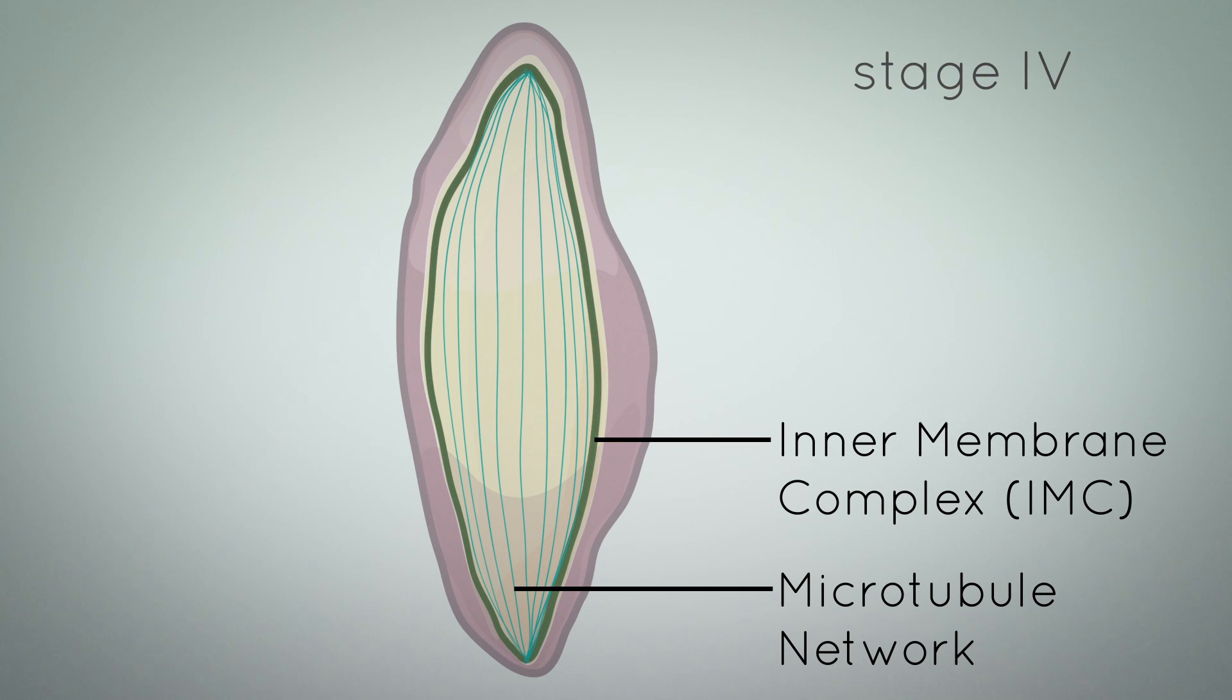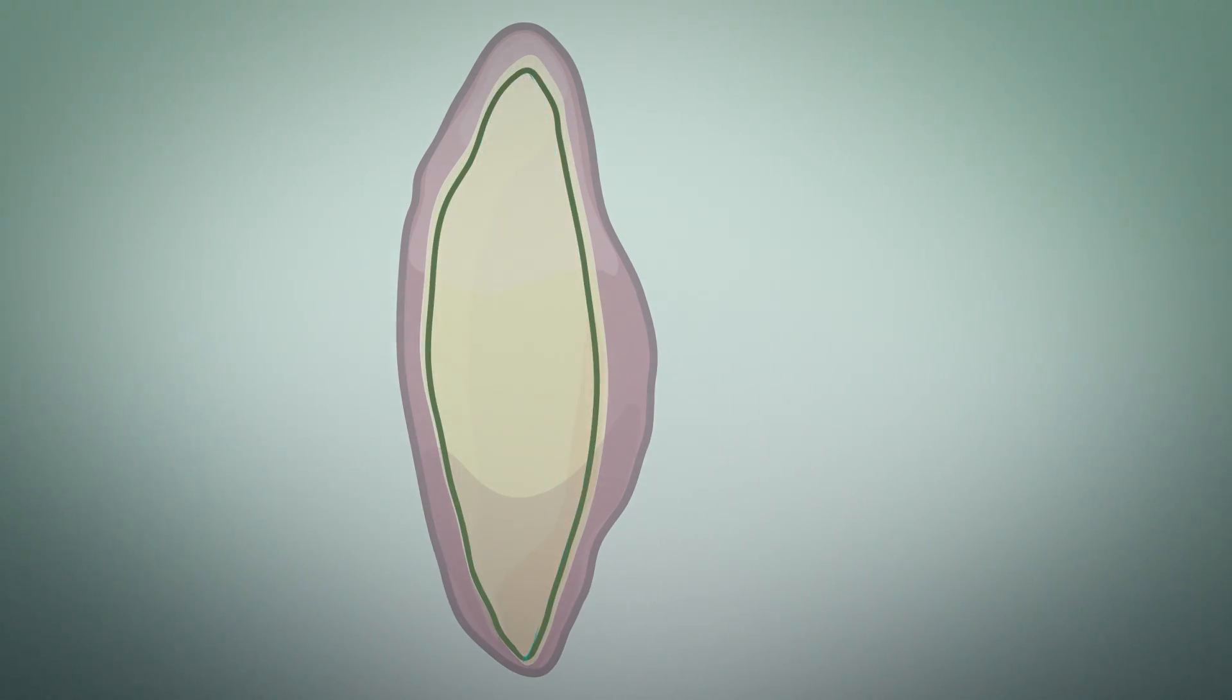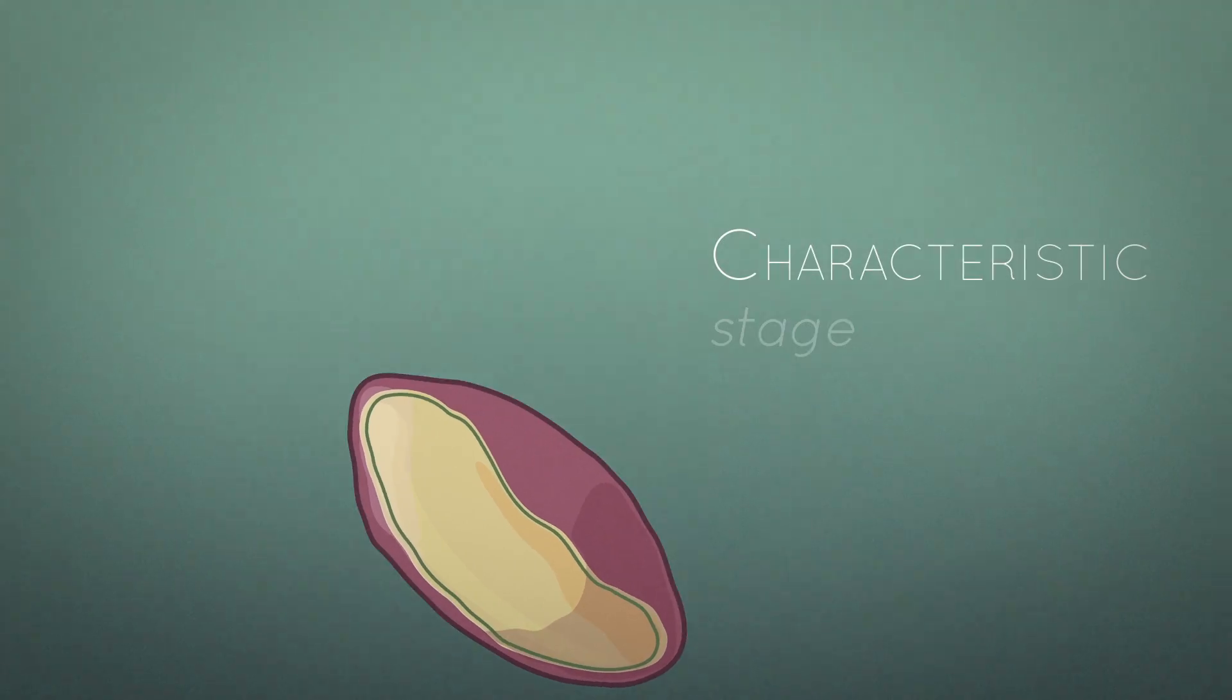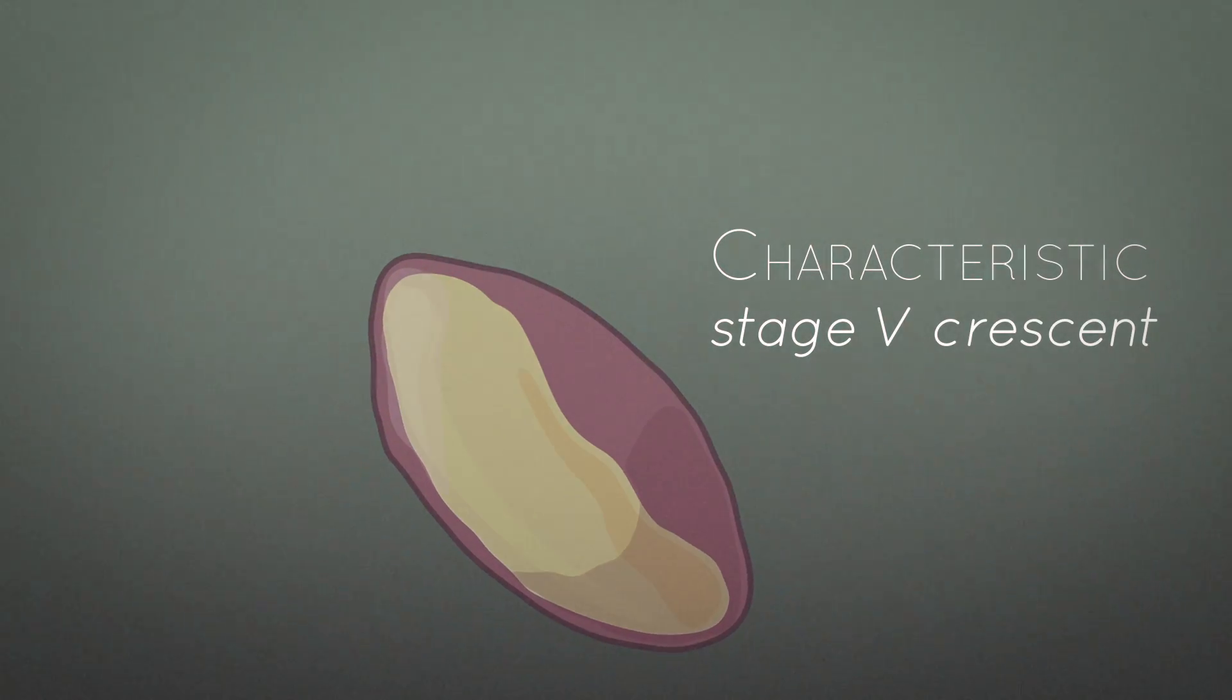When the microtubule network is disassembled, it results in the relaxation of the ends of the gametocyte, producing the characteristic stage five crescent. The Plasmodium parasite has completed gametocytogenesis.